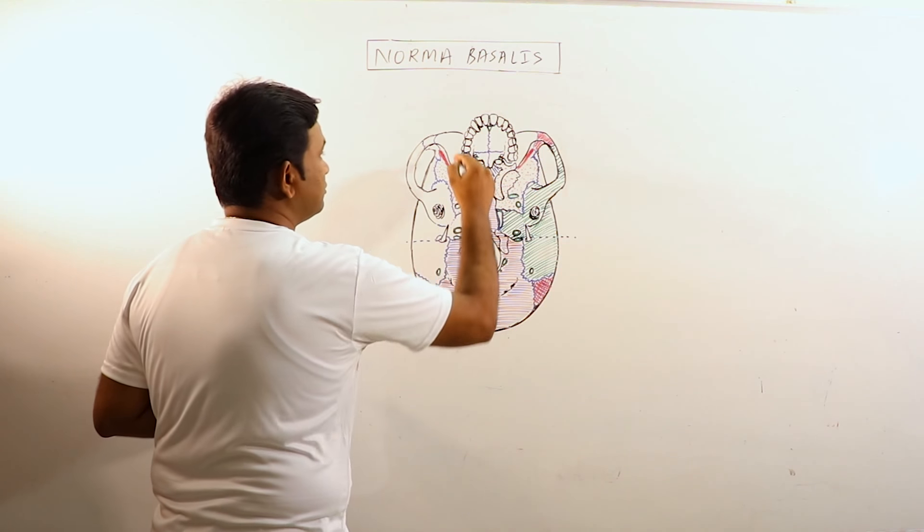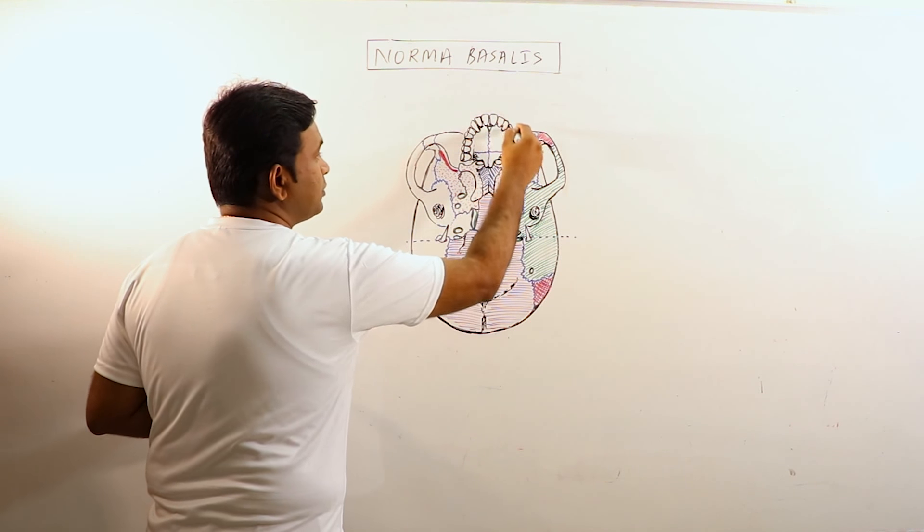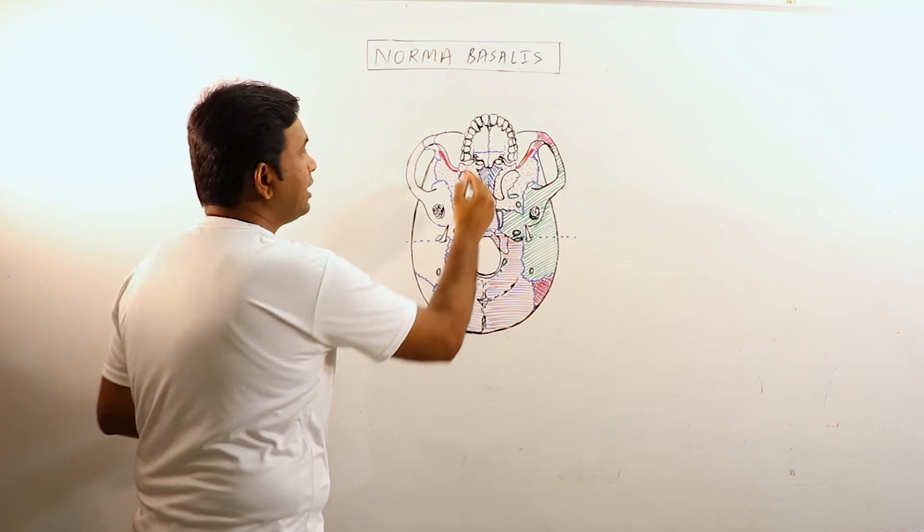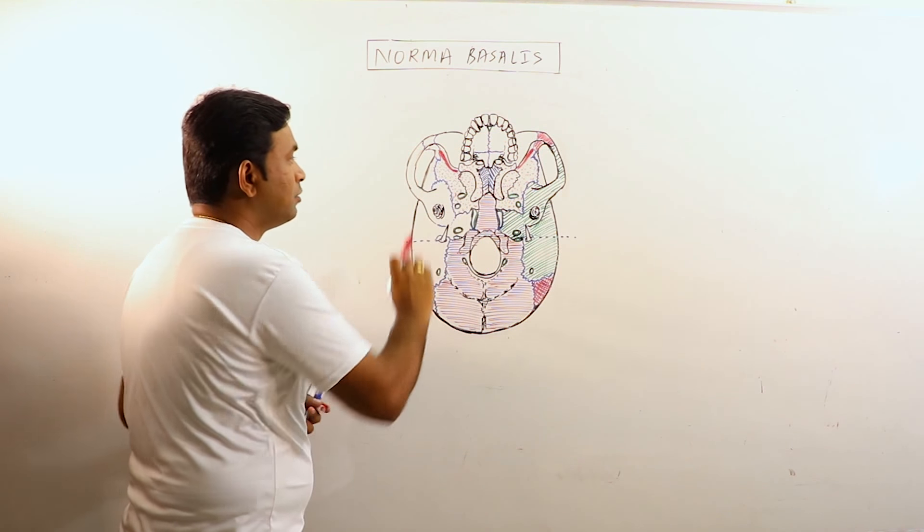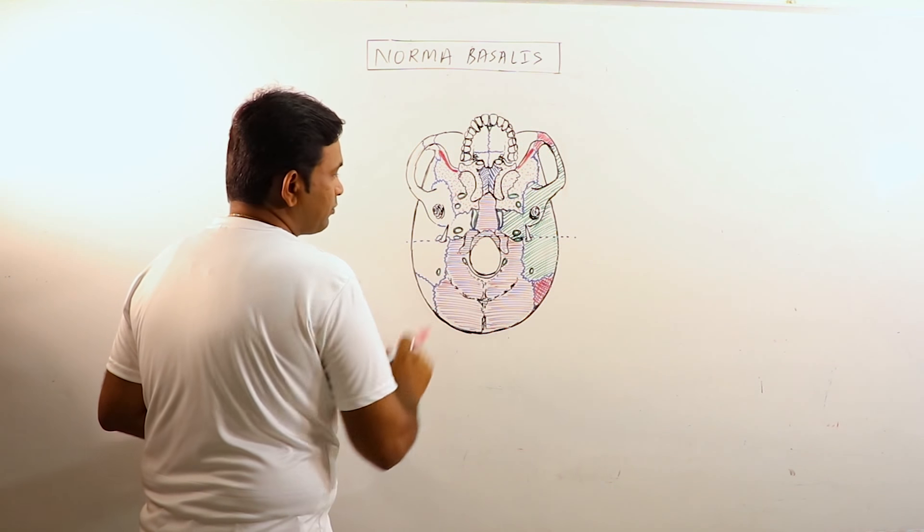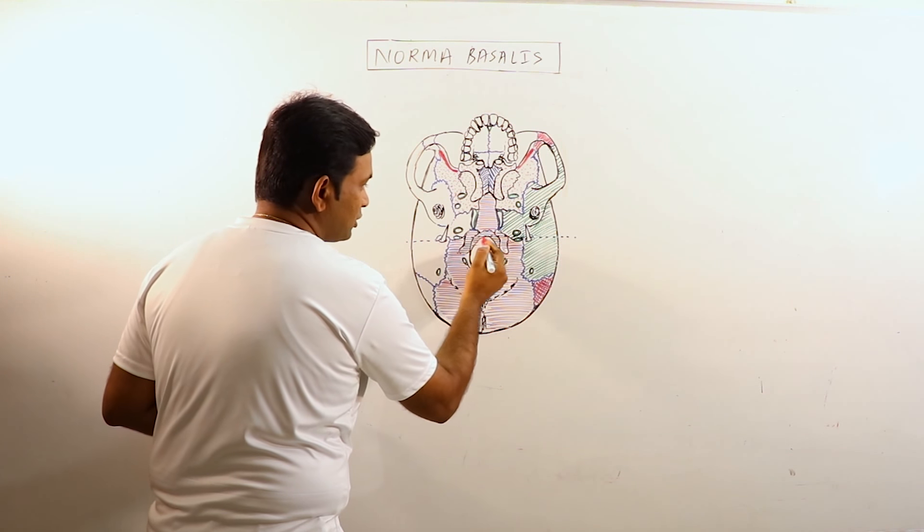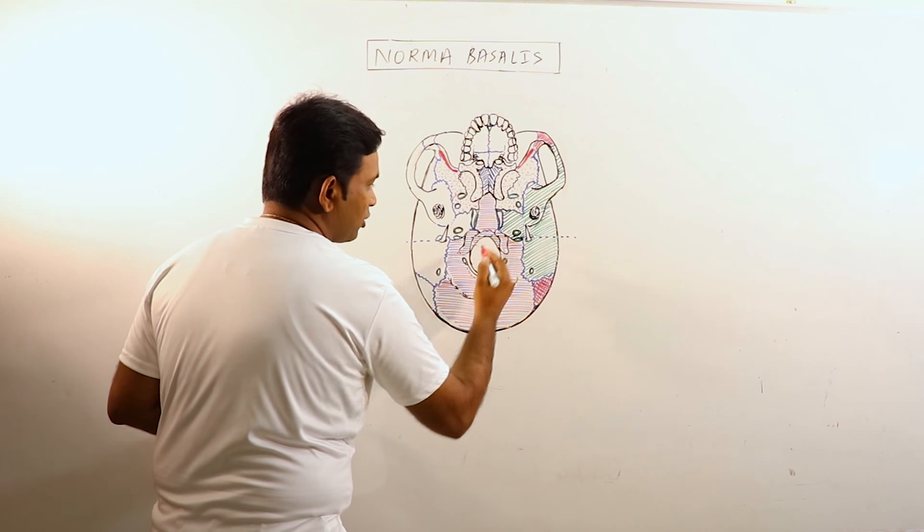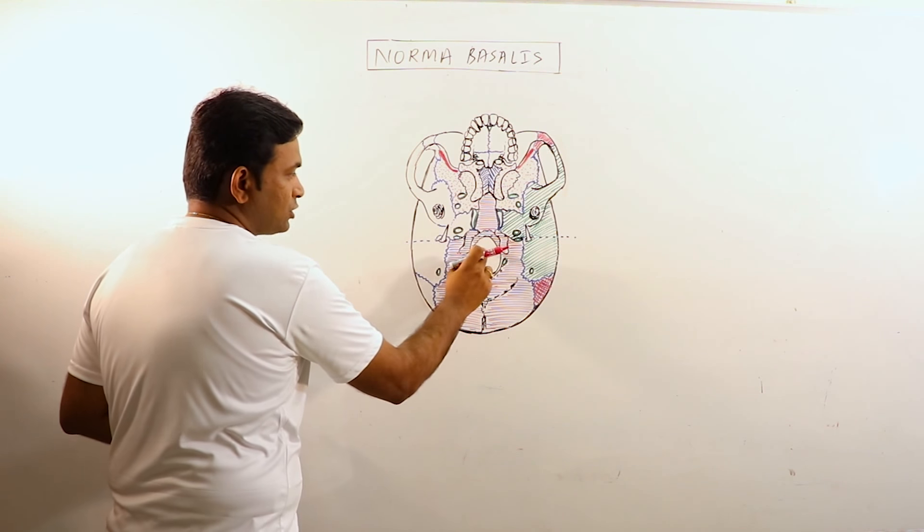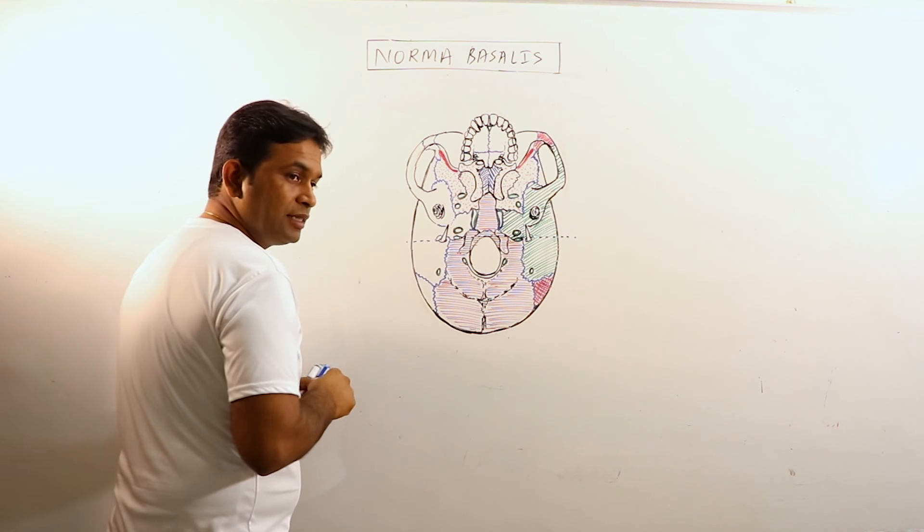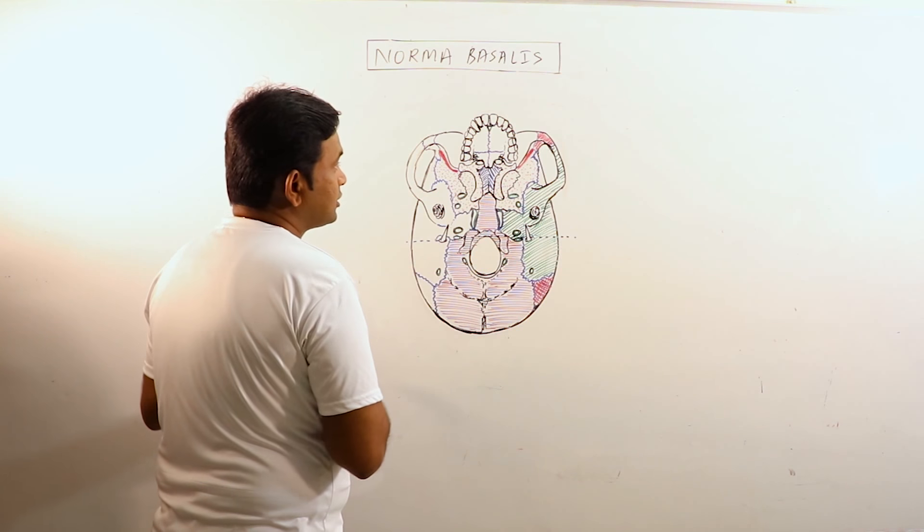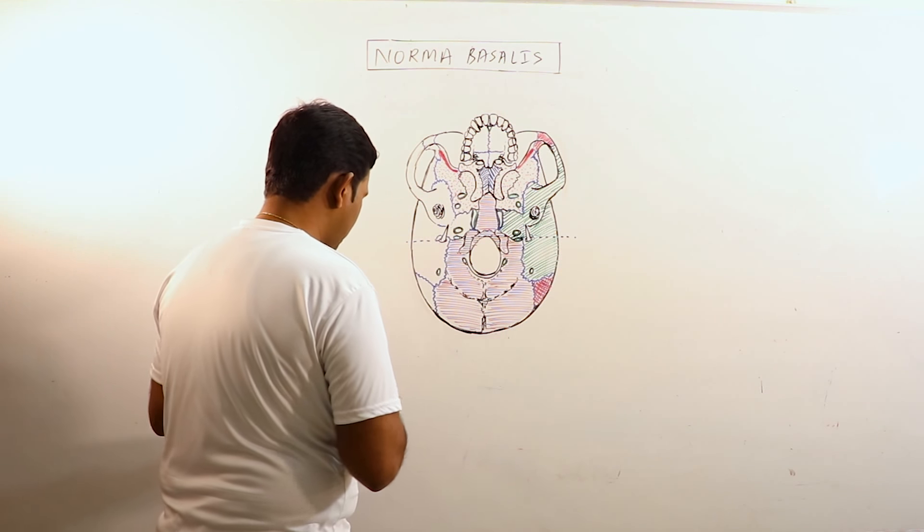This is the anterior part which is made up of alveolar processes and the hard palate. The middle part and the posterior part are basically separated by the imaginary line which traverses through the anterior margin or the border of the foramen magnum. This one is foramen magnum. So in this lecture we will first discuss the anterior part of Norma basalis.